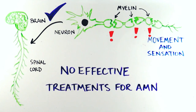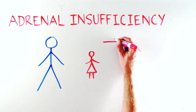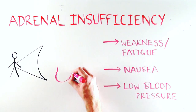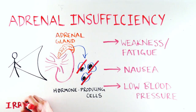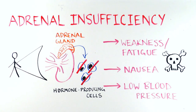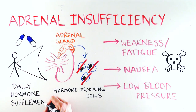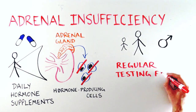The next most common phenotype is adrenal insufficiency, which eventually affects most men with the ALD genotype, but is rare in women. Symptoms include weakness and fatigue, nausea, and low blood pressure. In ALD, adrenal insufficiency occurs when the cells that produce hormones in the adrenal gland are injured. This injury is irreversible, and the resulting symptoms of low blood pressure and fatigue can be life-threatening if untreated. Fortunately, if diagnosed promptly, adrenal insufficiency can be safely and easily treated using daily hormone supplements. This is why all boys and men with the ALD genotype should be tested regularly for adrenal insufficiency.